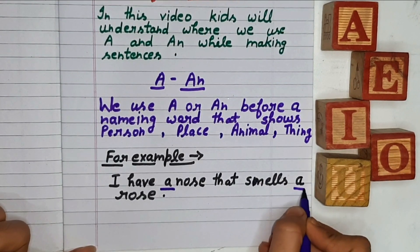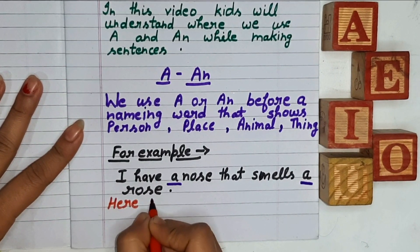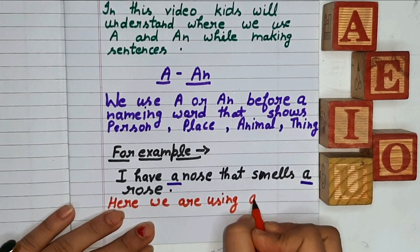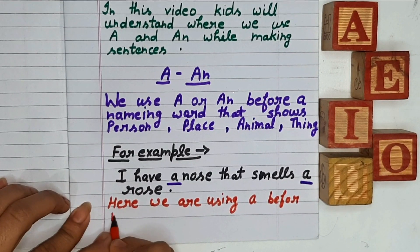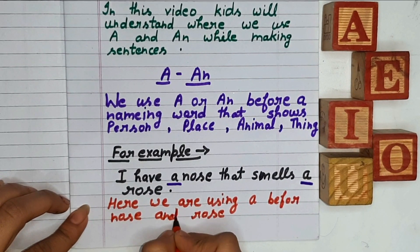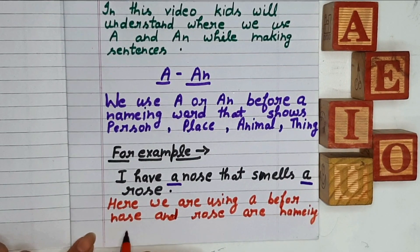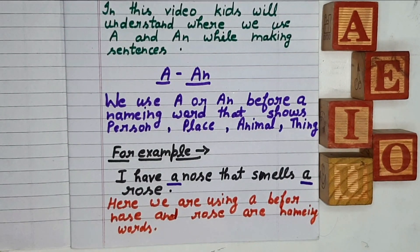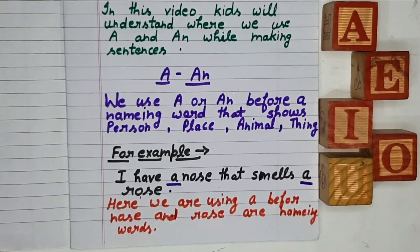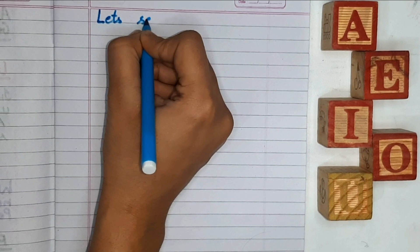Here we are using A before nose and rose, our naming words. Here we are using A before nose and rose, our naming words. Now let's see another example.